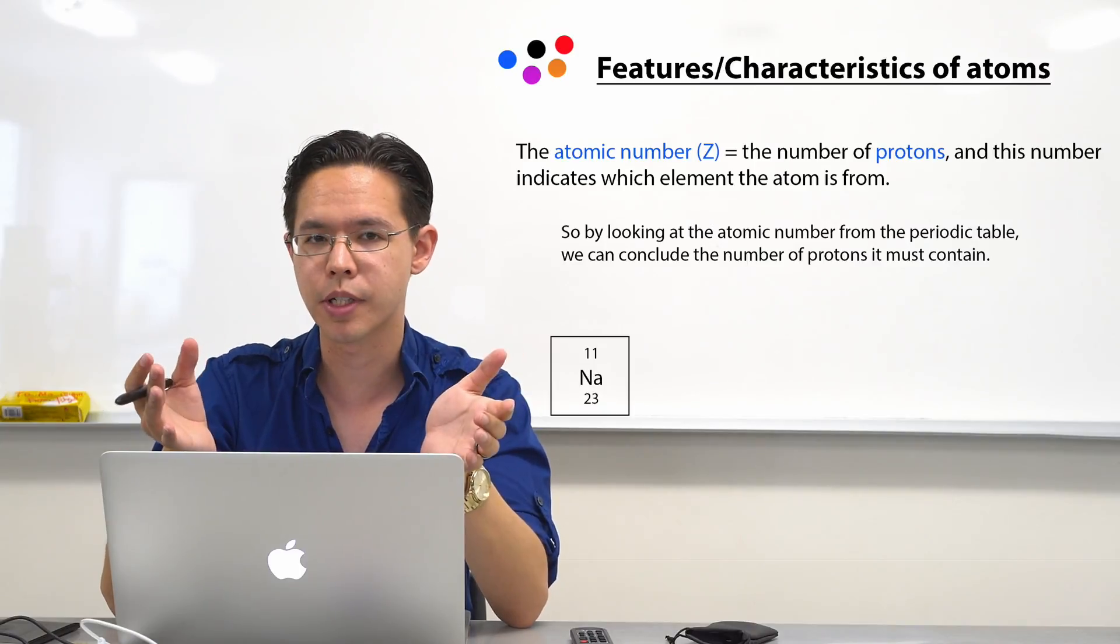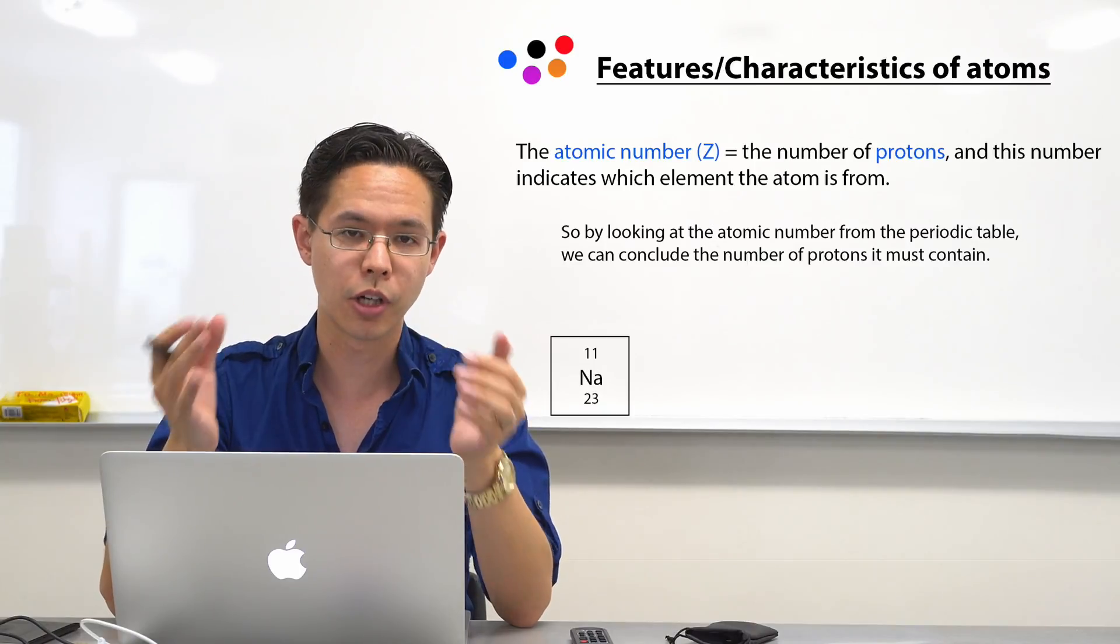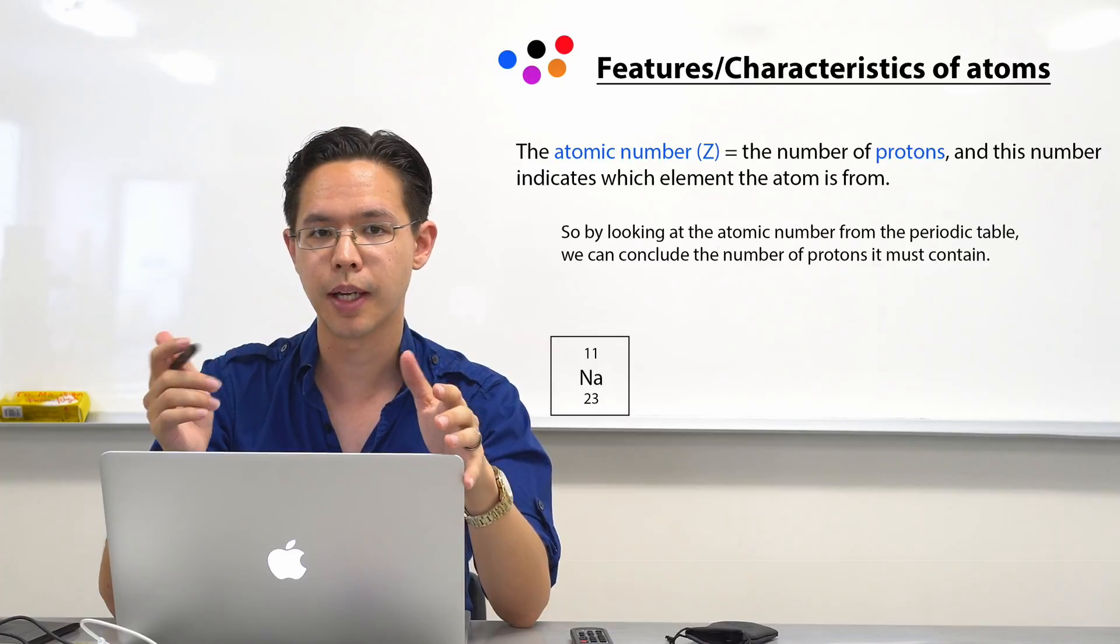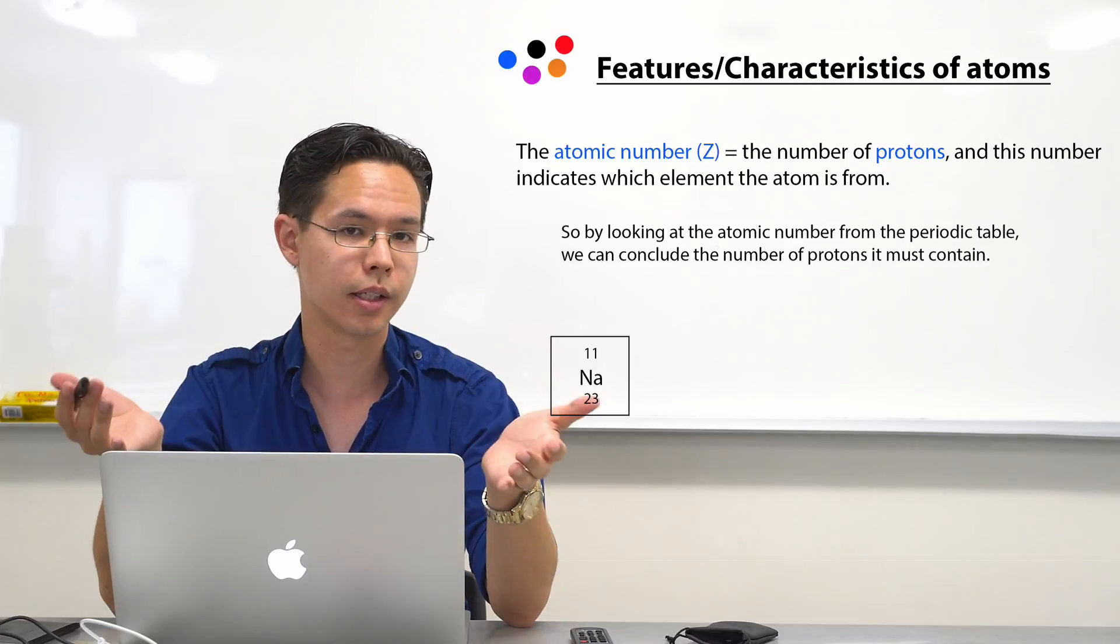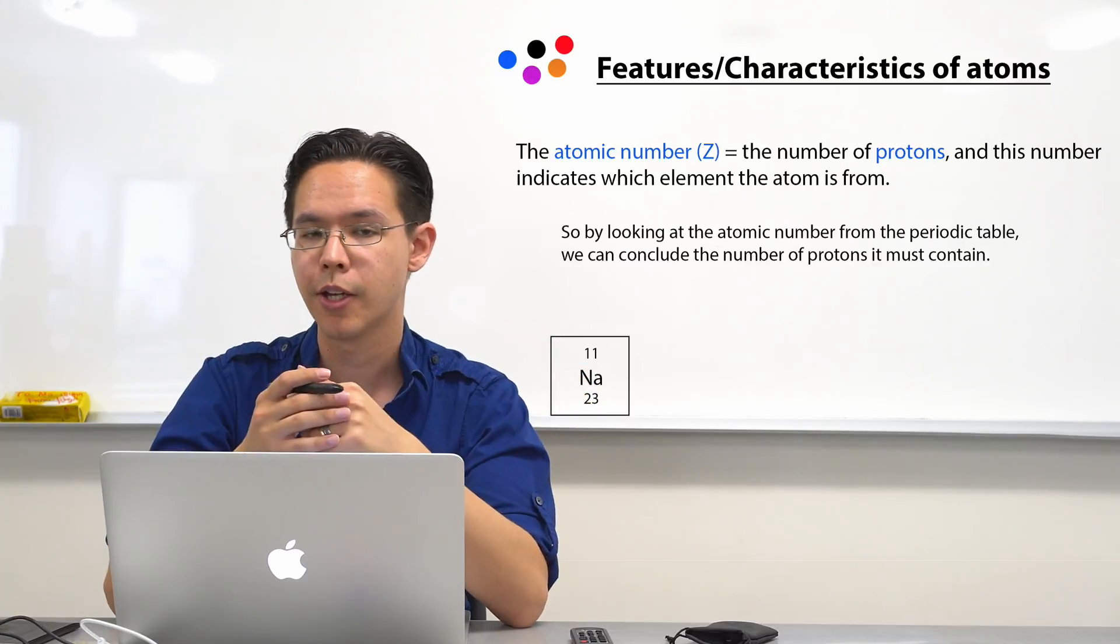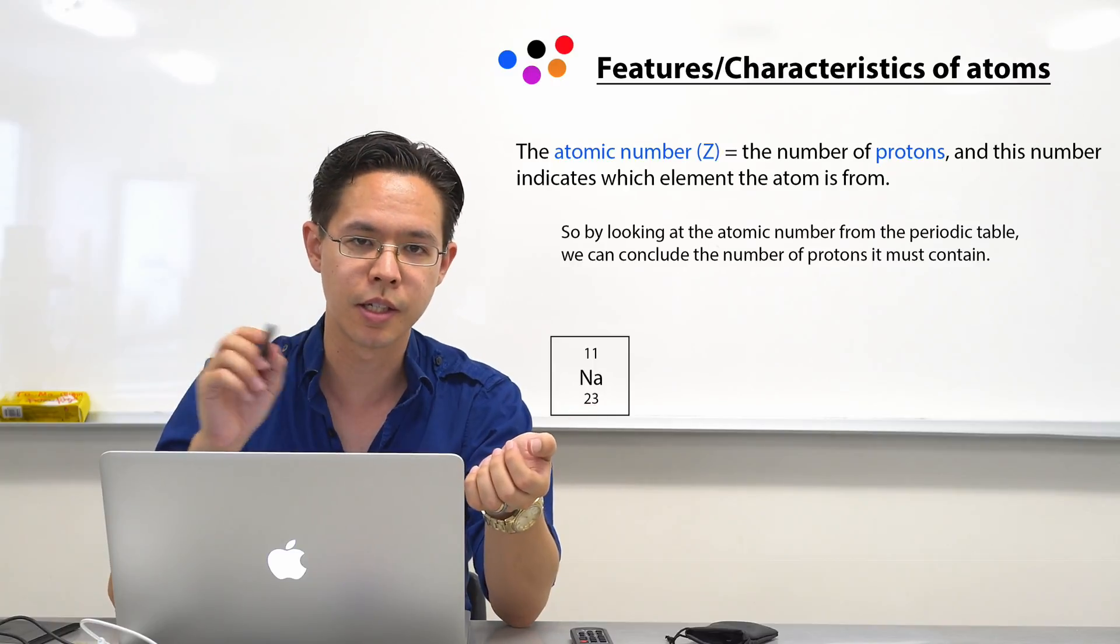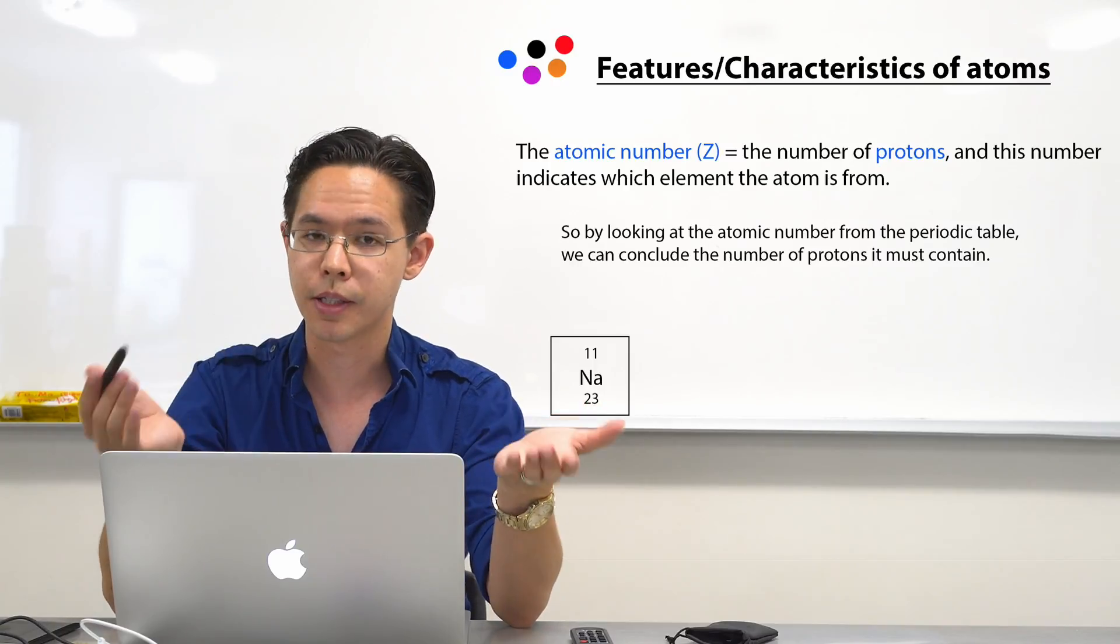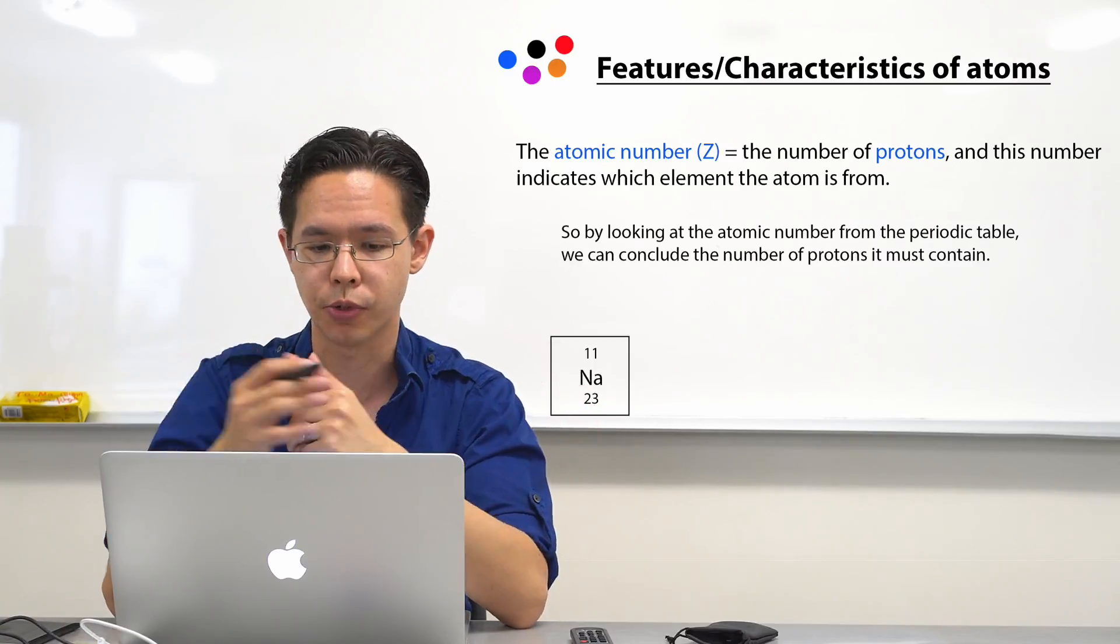Our first feature or characteristic of atoms is the atomic number. The atomic number has the letter Z, that is the representative symbol for it. So if you find in a book that it says Z equals 2, then it's saying the atomic number is 2.